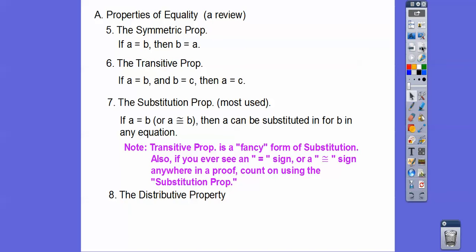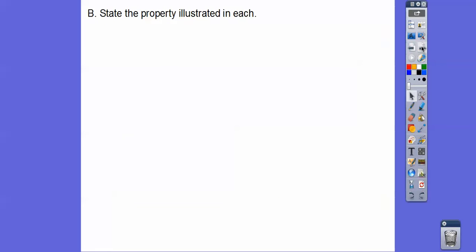The distributive property says we can distribute A through the parentheses: A(B + C) equals AB plus AC, and A(B − C) equals AB minus AC. You've seen all of those before. All right, let's try it.